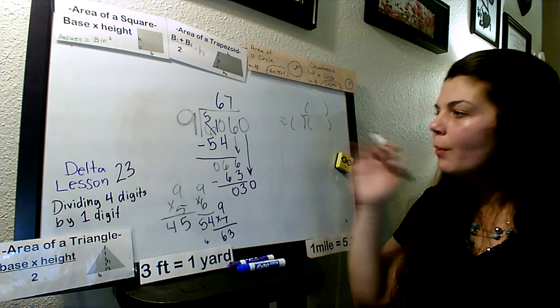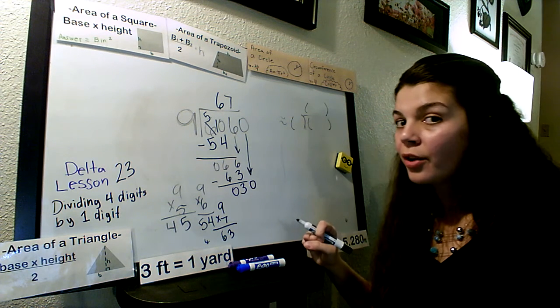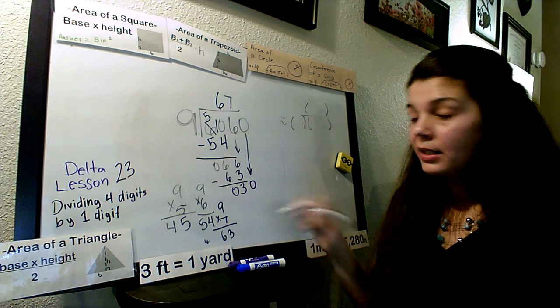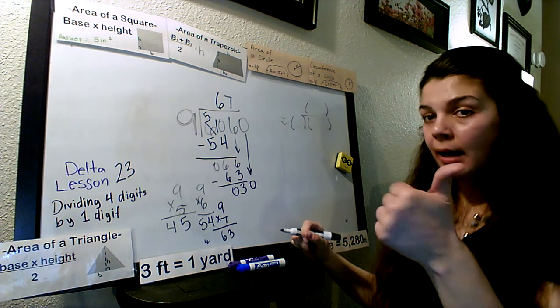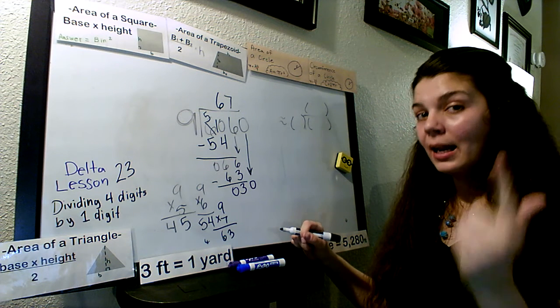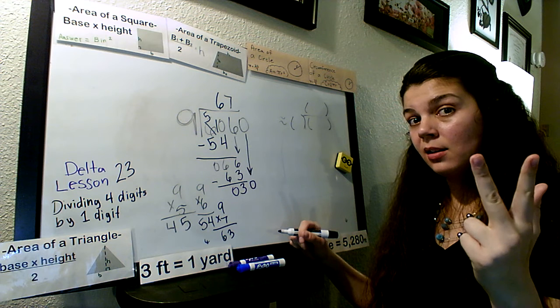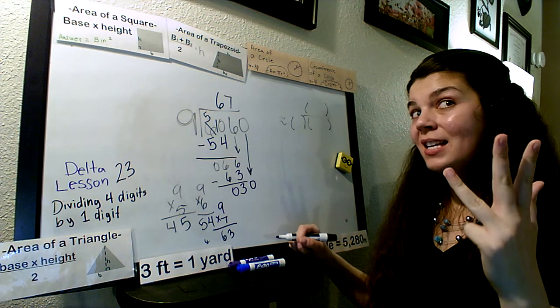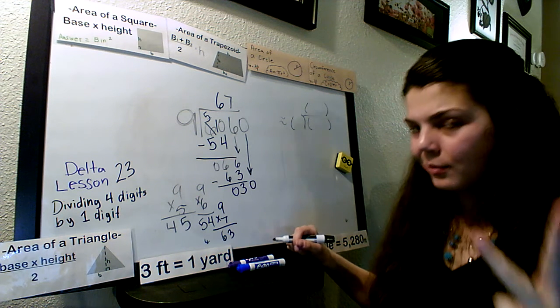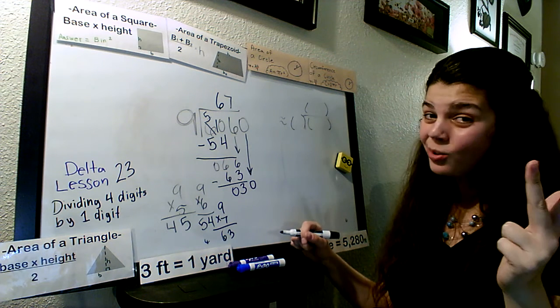0. How many 9s go into 30? We might not need to spitball this. 9, 18, 27, 36.